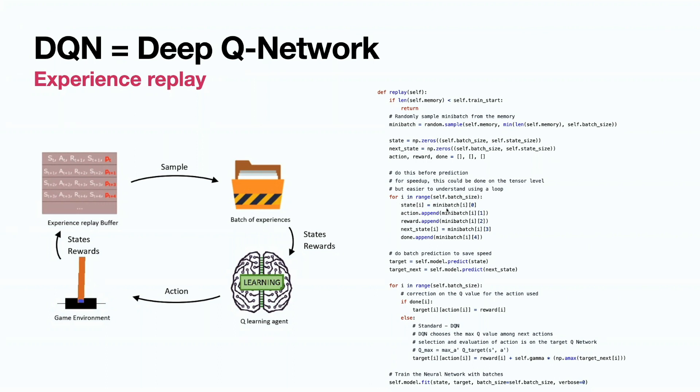We take every sample from this mini batch by index, and then append actions, reward, next states, and done in the flat structure to pass to the model. Then we pass past experience to our model. We use the model to predict, and we pass the state that we took out of our replay memory. And now we are trying to predict next target.